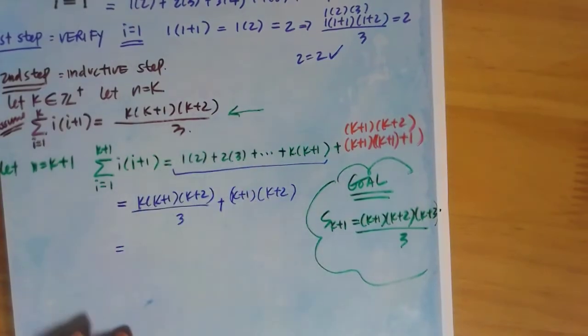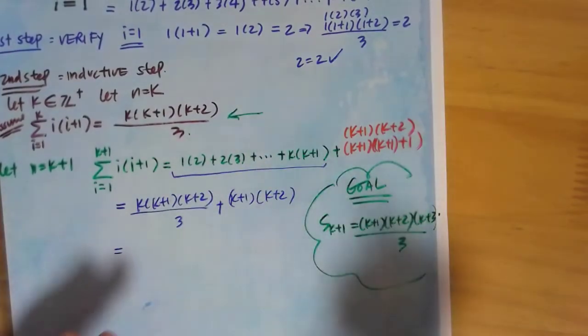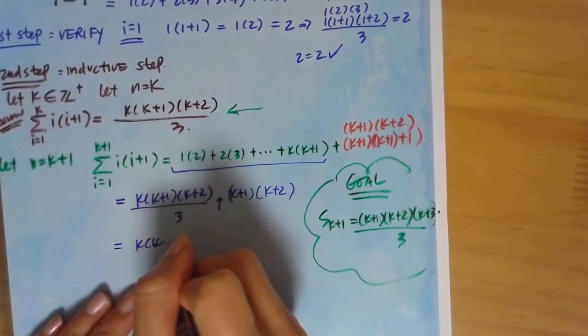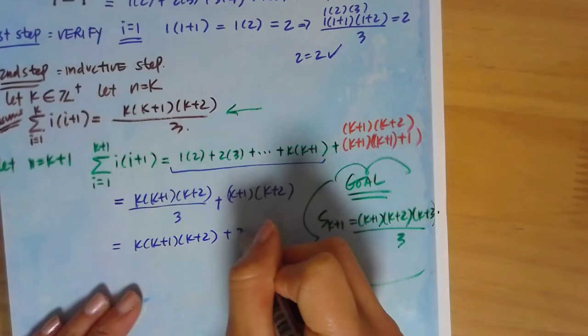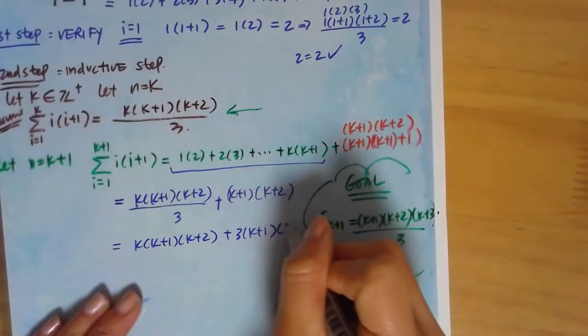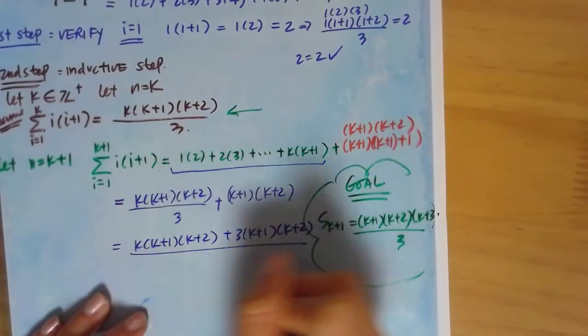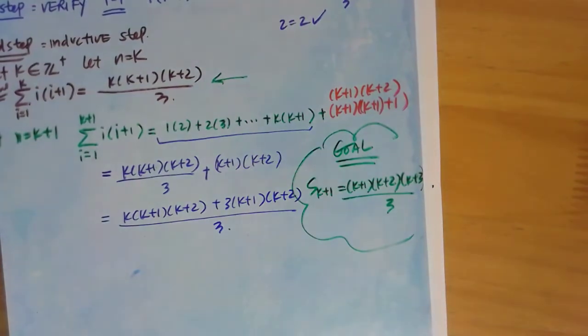All right, well I'm just going to try to combine them using LCD. So k, k plus 1, k plus 2, plus 3 over 3. So it's going to be 3 times k plus 1, k plus 2 all over 3. I combined them into one fraction. But this looks nothing like this, so I'm not done.